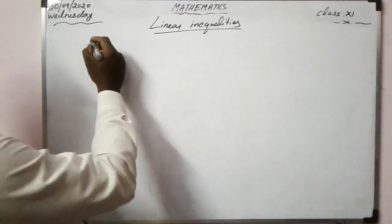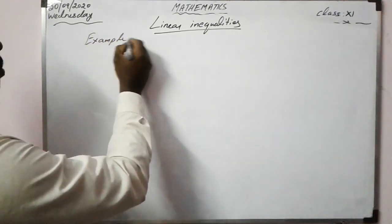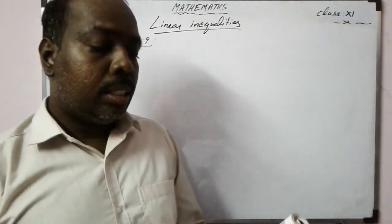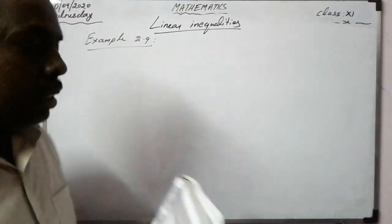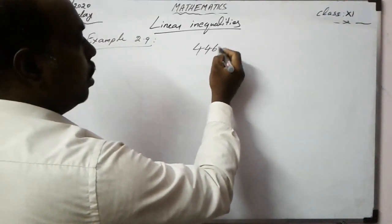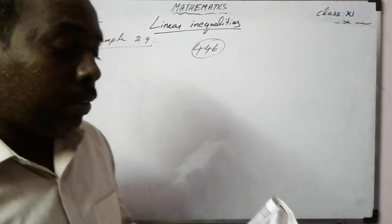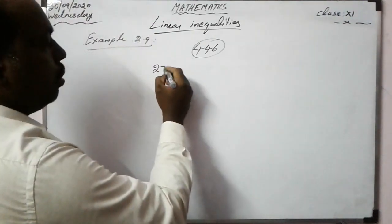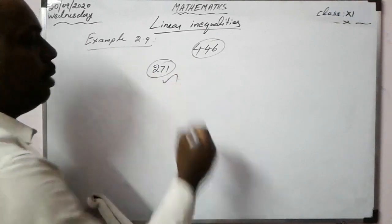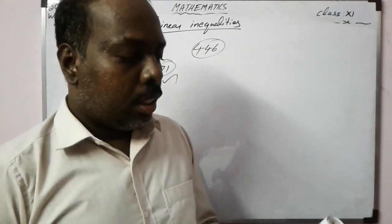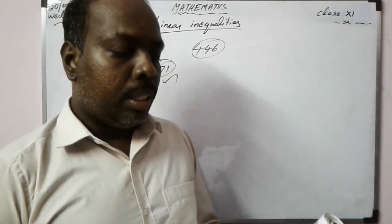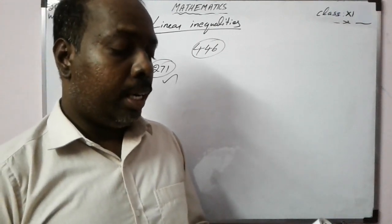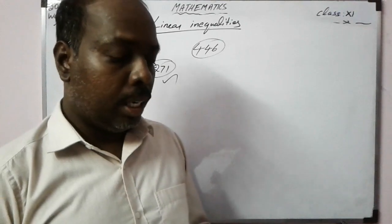Example 2.9. A girl is reading a book having 446 pages, and she has already finished reading 271 pages. She wants to finish reading this book within a week. What is the minimum number of pages she should read per day to complete the book within a week?